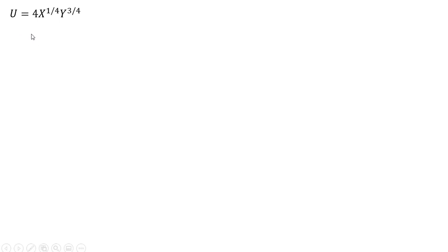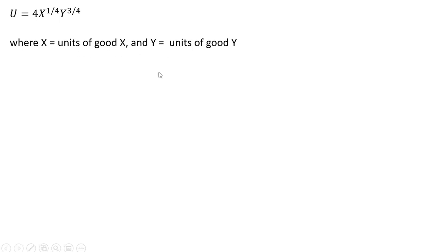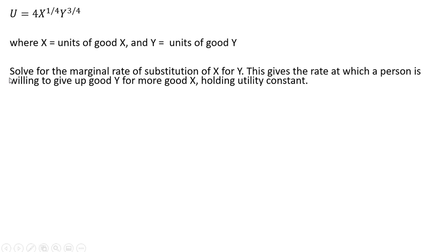Example 2: a different utility function, a Cobb-Douglas utility function. X represents units of good X, and Y equals units of good Y. We want to solve for the marginal rate of substitution of X for Y. This gives a rate at which a person is willing to give up good Y for more good X, holding utility constant.